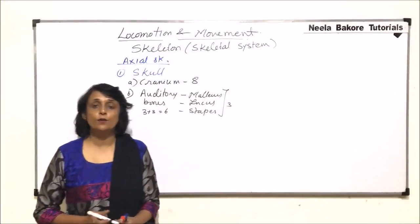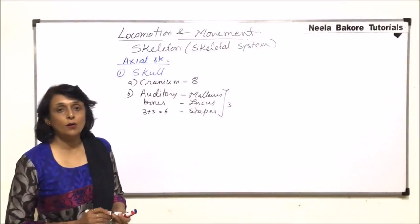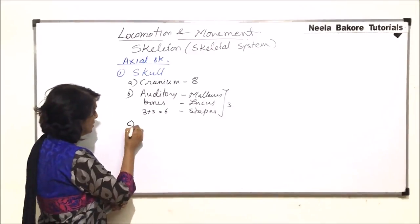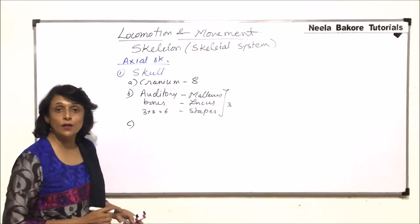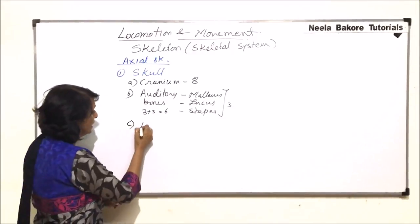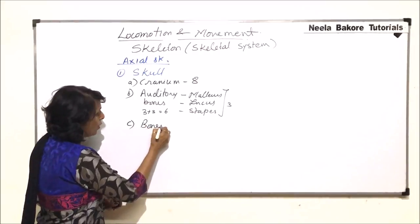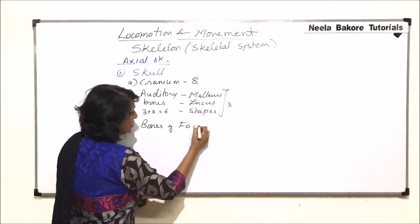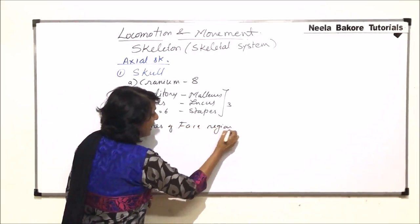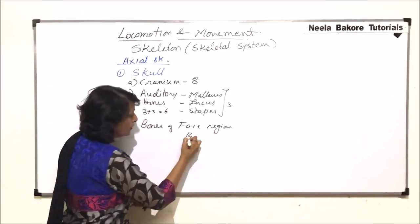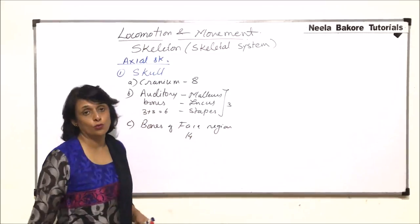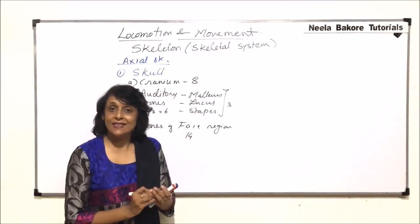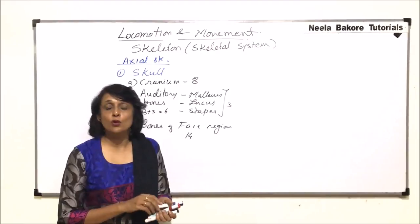In this video we will talk about the bones of the face region. This is our third category. There are a total of 14 bones in our face region. Let us see where these bones are located and write down their numbers.